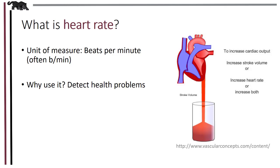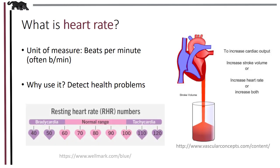Normal resting heart rates generally fall between 60 and 100 beats per minute. Anything over 100 is possibly due to heart arrhythmia, stress, infection, excessive caffeine intake, or a worsening heart problem. Resting heart rates over 100 is known as tachycardia and is unfortunately linked with greater risk of premature death, especially in men.